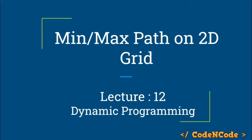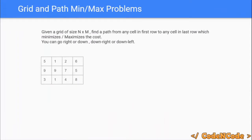Hello guys, this is Code and Code and this is the 12th lecture of this dynamic programming series part 1. In the previous lecture we have seen there are two kinds of path queries to discuss. The first type we already covered in lecture 11, where you start from cell (1,1) and reach cell (n,m), moving either down or down-right, maximizing or minimizing the total path sum.